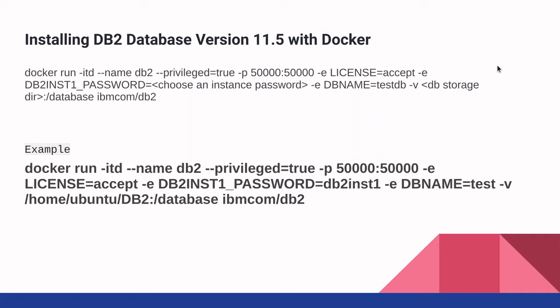The next important part of this video tutorial is how to get DB2 database installed with Docker. You already got Docker installed and now you can install DB2 on top of that. Here I have mentioned the version as 11.5 because currently that is the latest version. But using the same command, you can install an older version or latest version. The command is you have to use this docker run command. For the name parameter, you can provide anything you prefer. Then you have to set privileged as true. The minus P denotes the port, and 50,000 is the default port that DB2 will be running on.